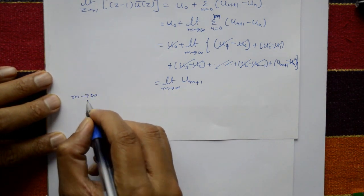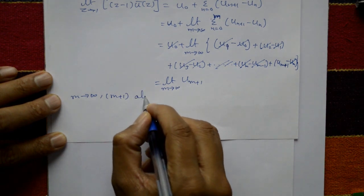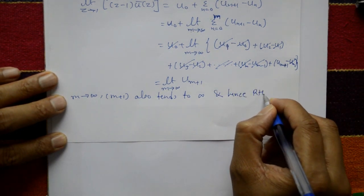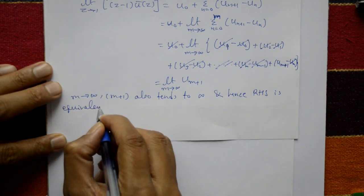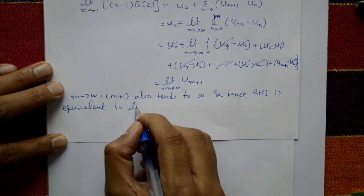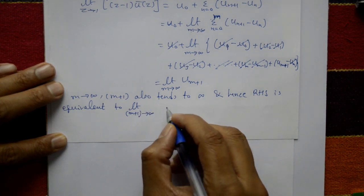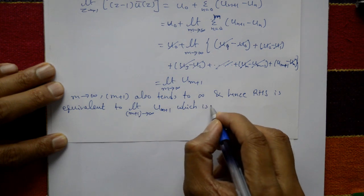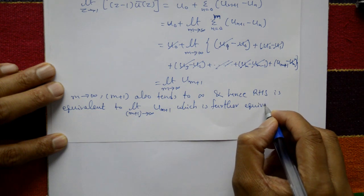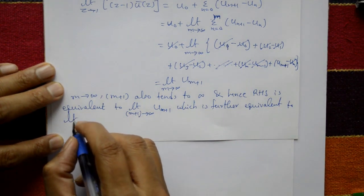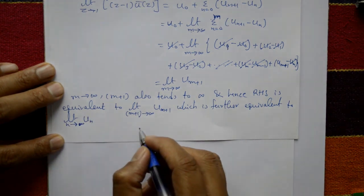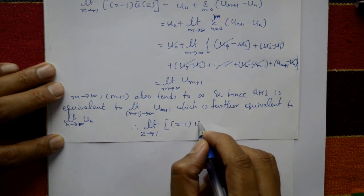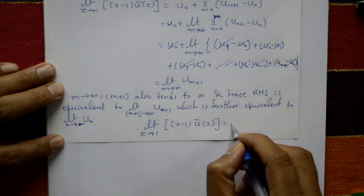It should be noted that as m tends to infinity, m plus 1 also tends to infinity, so the right-hand side is equivalent to the limit as m tends to infinity of u_{m+1}, which is further equivalent to the limit as n tends to infinity of u[n]. Therefore, limit as z tends to 1 of (z minus 1)·ū(z) equals limit as n tends to infinity of u[n], which is the required result.